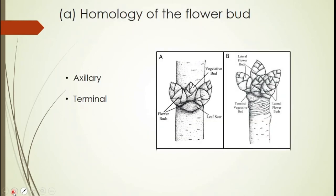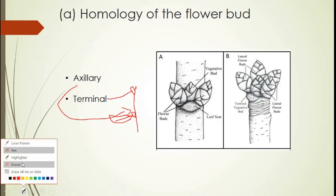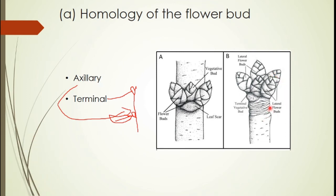There are several evidences that show the flower is a modified shoot. In a plant there are vegetative buds, which may be terminal — at the top of the shoot — or axillary, found in the axils of leaves. The flower bud is also found in these two positions: near the terminal vegetative bud, and near or in the same position as the axillary vegetative buds.